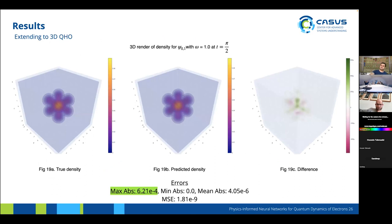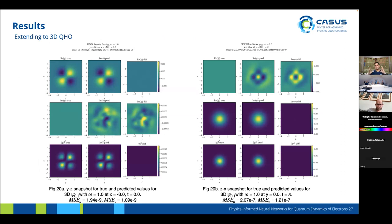Here are some results for the 3D quantum harmonic oscillator. We shouldn't look at the mean squared error here because most of the space is zero-valued points, which brings the error down significantly. But even the maximum absolute error is of the order of 10⁻⁴, which is very good for the system. These are some slices from the 3D volumes. The solutions look very close, and in the middle column there is some noise in the imaginary predictions, but the magnitude of that noise is very low.